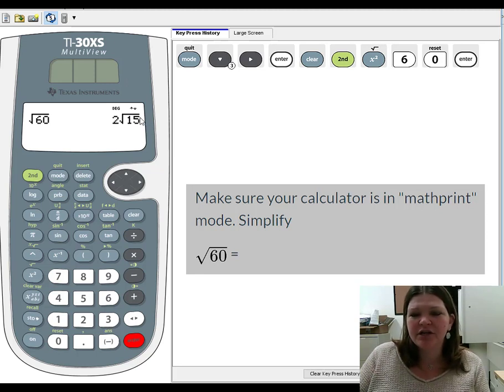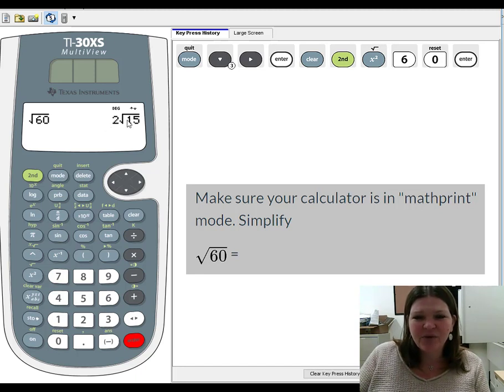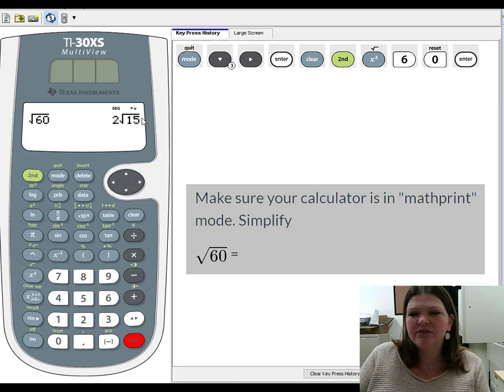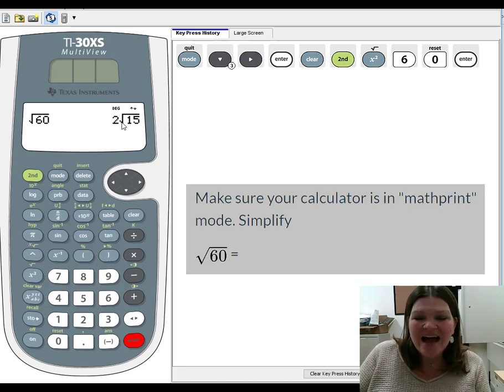And you'll see that it gives me a simplified radical answer. It doesn't give me a decimal approximation. It does as much of the square rooting as it can and then leaves the rest that can't be square rooted without decimals inside the house. That house is actually called a radical. So I just got an exact answer or a simplified radical.